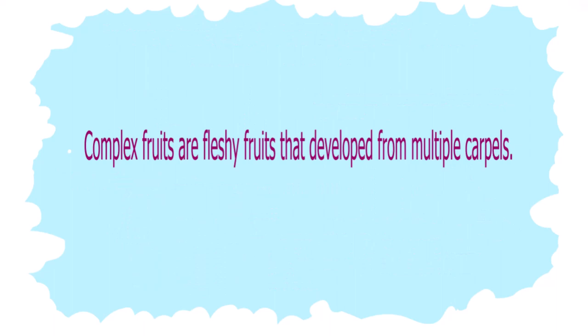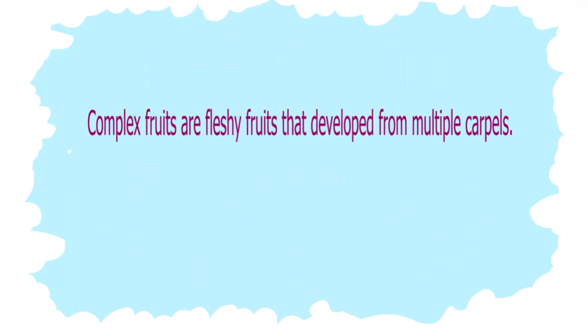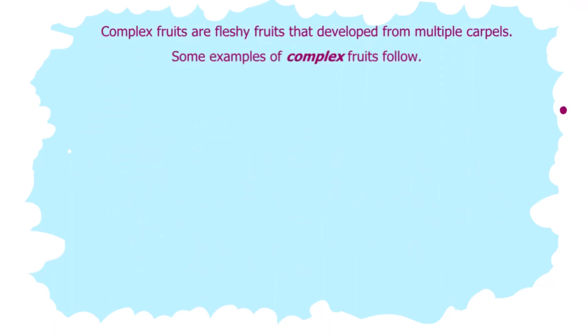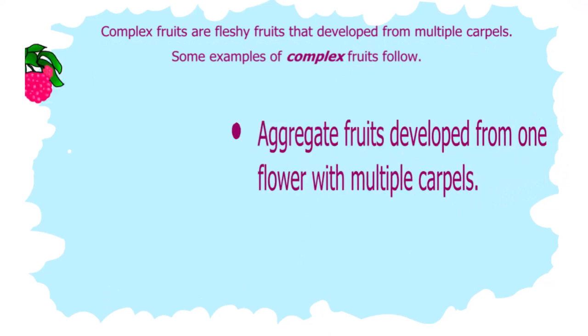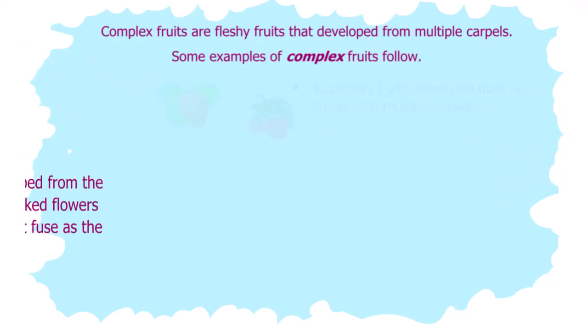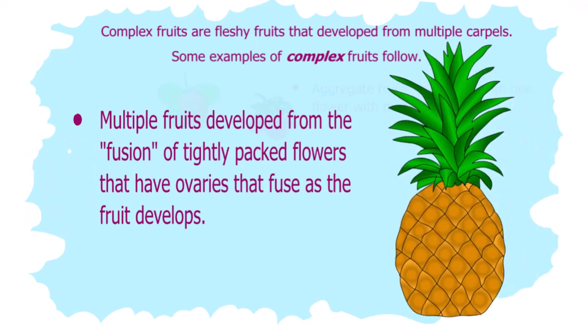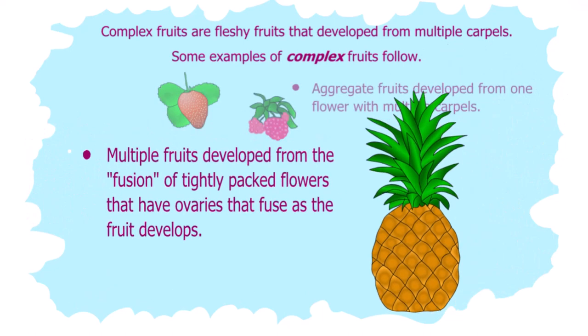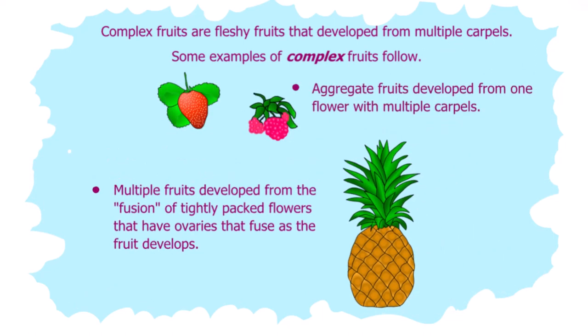Complex fruit is fleshy fruit developed from multiple carpels. Aggregate fruits develop from one flower with multiple carpels. Multiple fruits develop from the fusion of tightly packed flowers that have ovaries that fuse as the fruit develops.